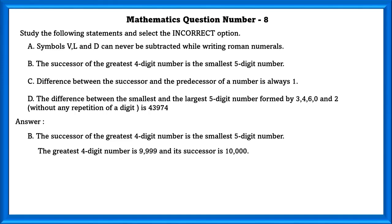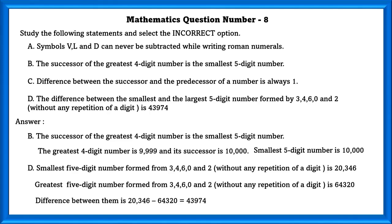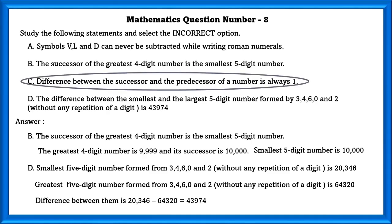Let us also check option D. The difference between the smallest and largest five-digit number formed by 3, 4, 6, 0, and 2 is 43,974 — yes, that is correct. So the incorrect option is C.